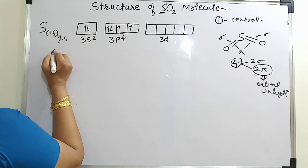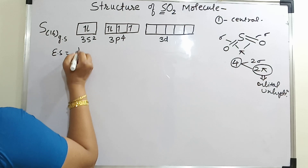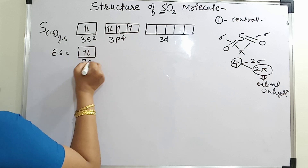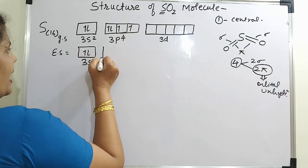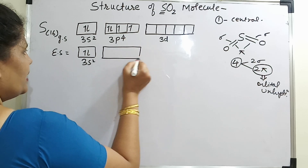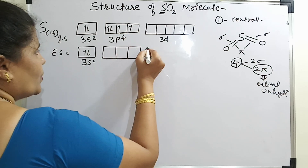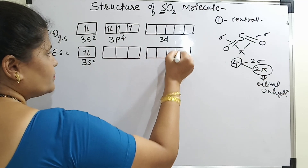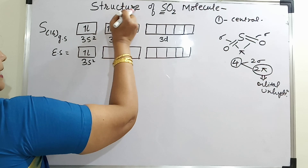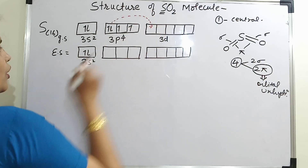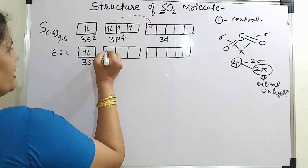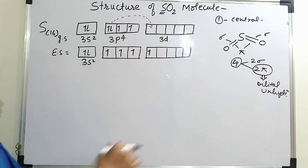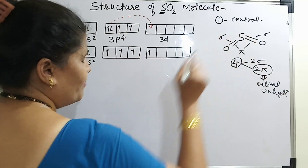Sulfur in the excited state will have 3s2, it will remain as it is, and 1 electron from 3p will get excited to 3d. So the electrons will be 1, 1, 1 and 1. I have now created 4 unpaired electrons according to the number of bonds.